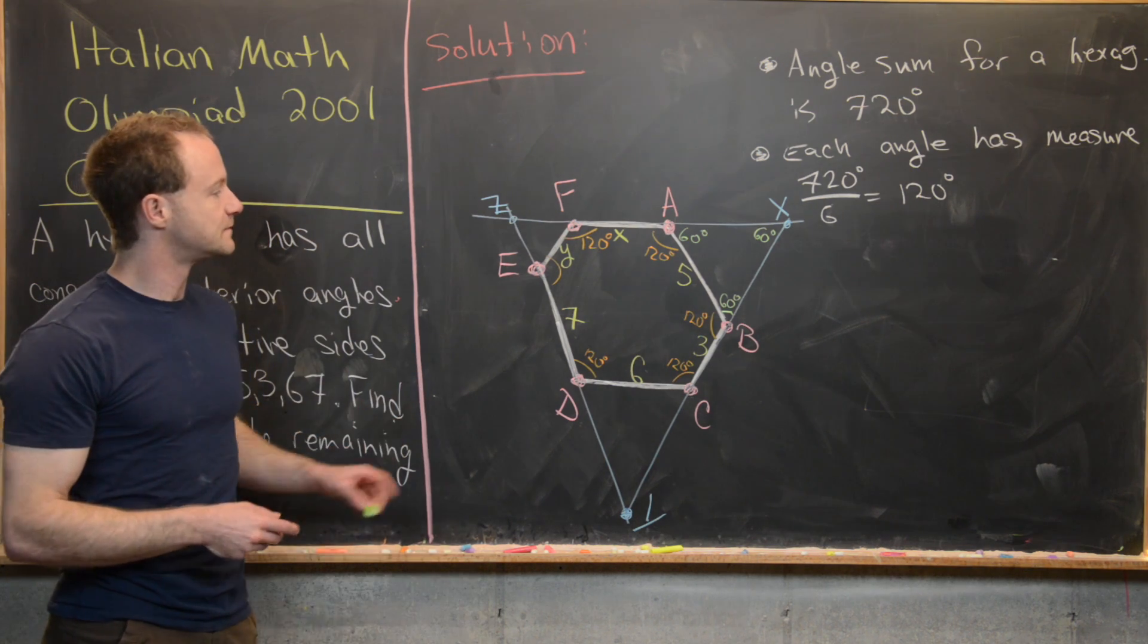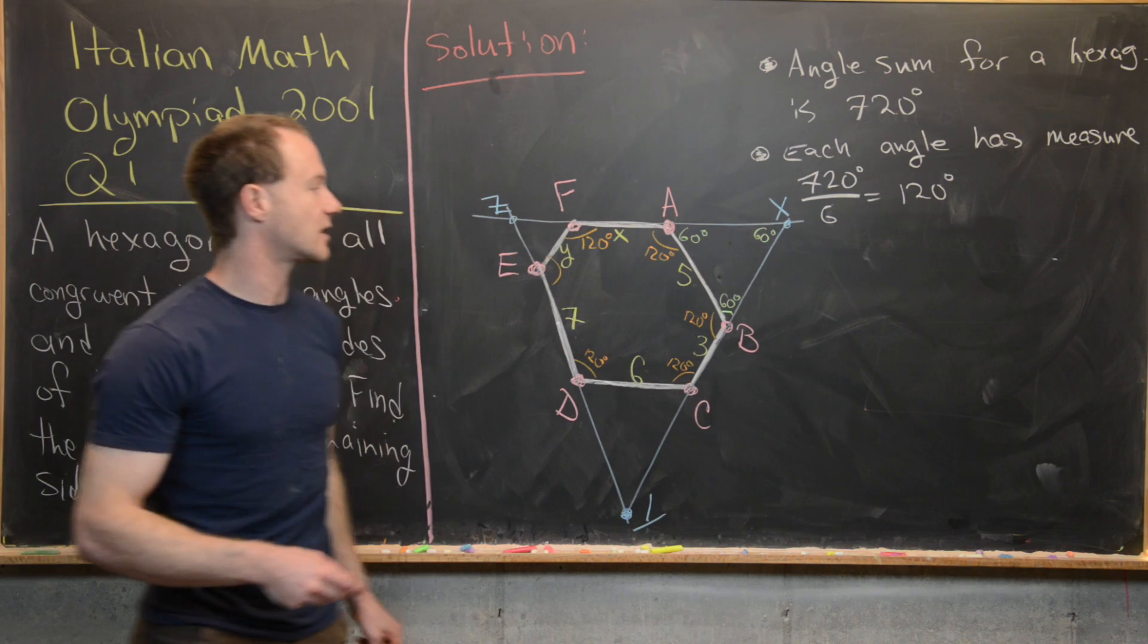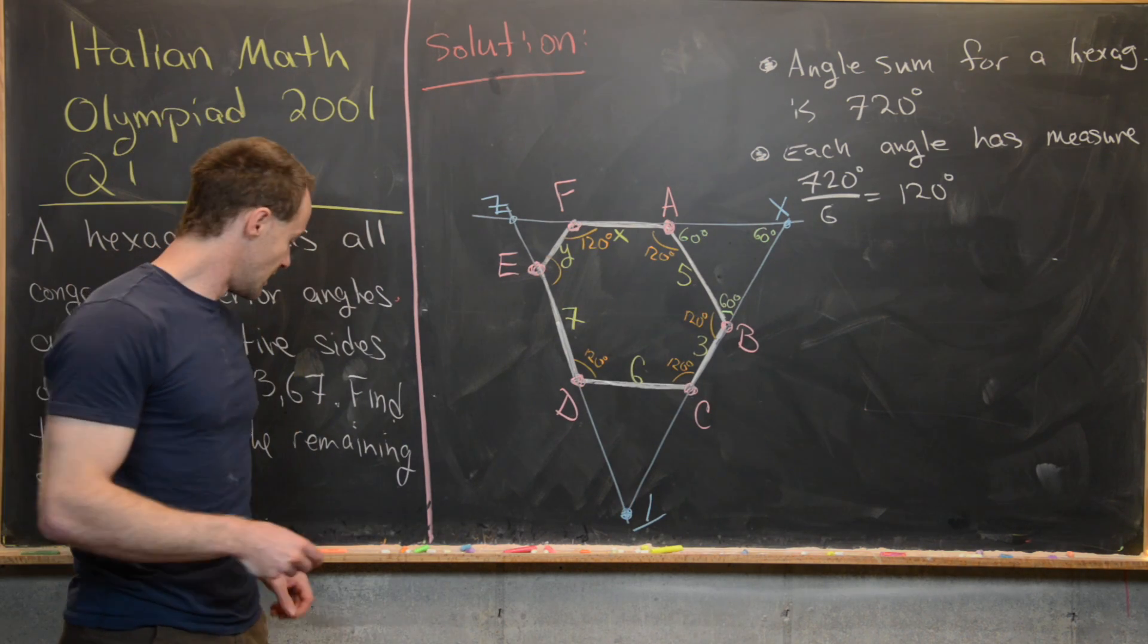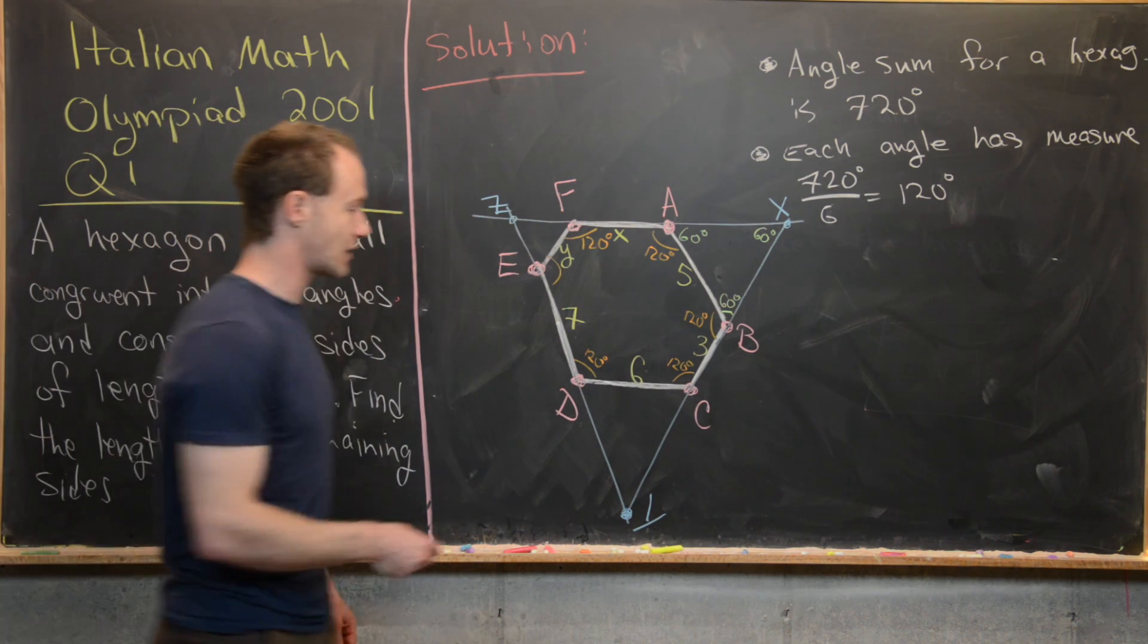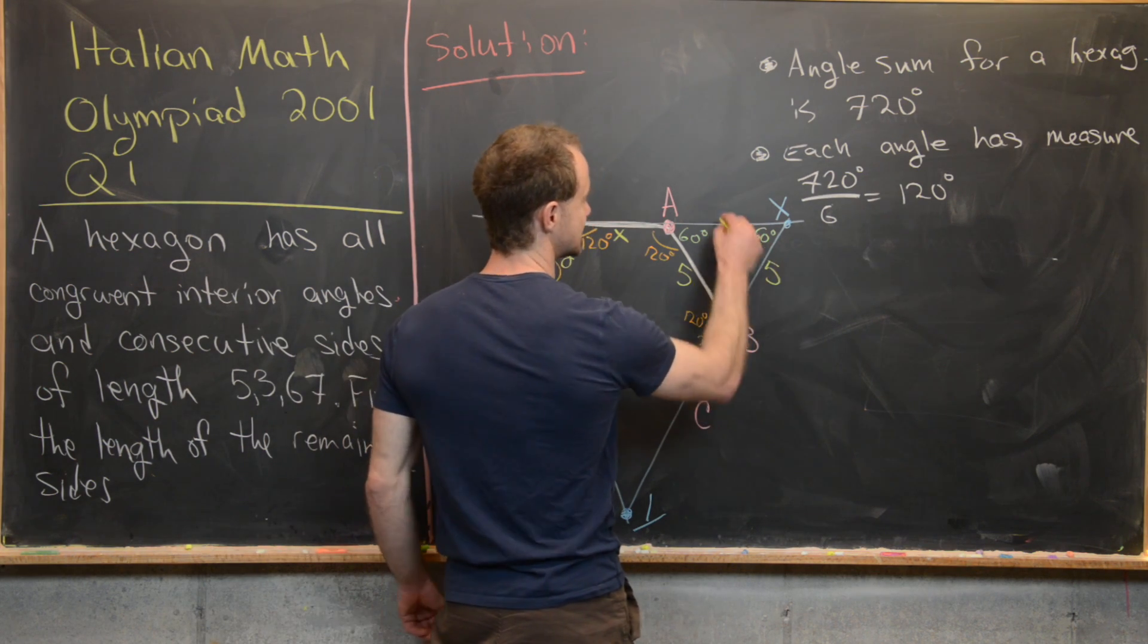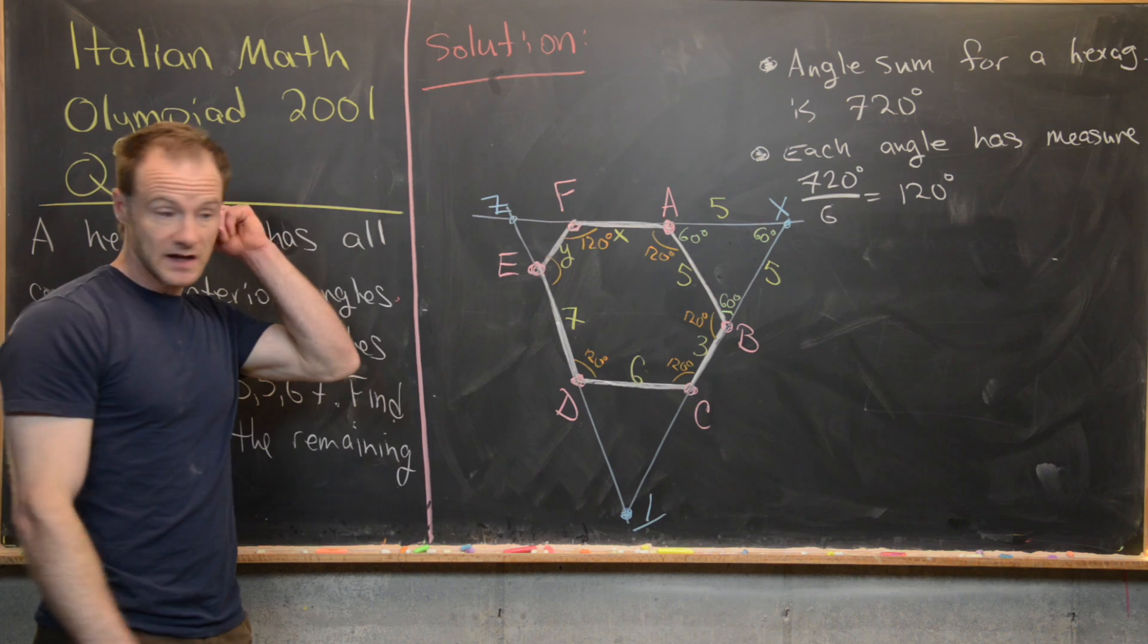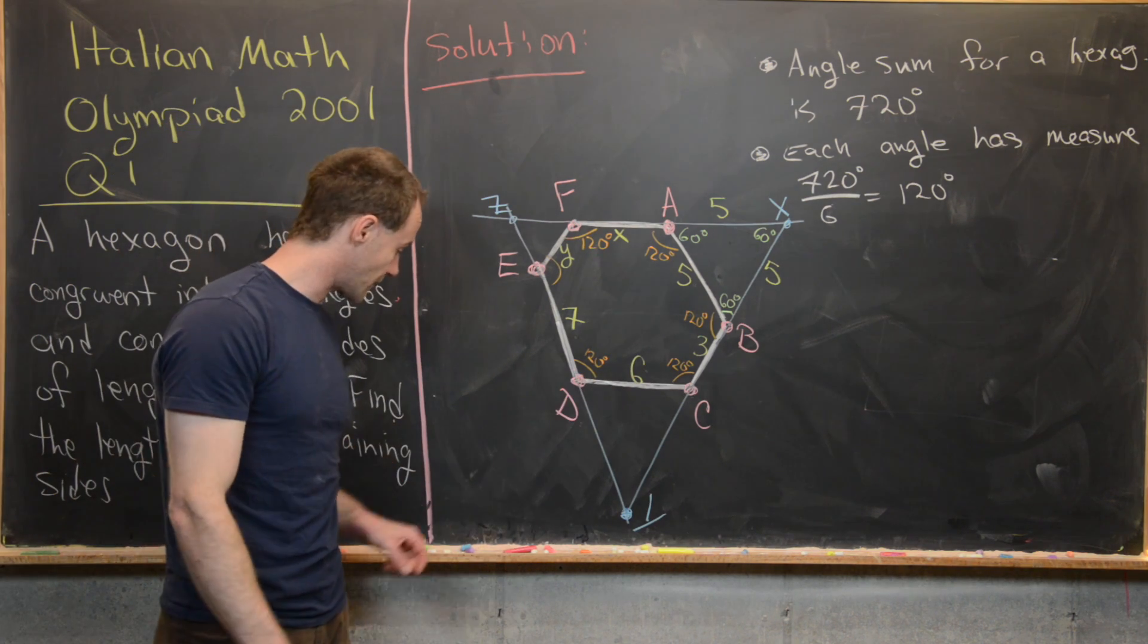So what that means is that this triangle right here is equilateral. But if that triangle right there is equilateral and it has this side length of 5, then it has this side length and this side length of 5. Now we can play the same game over here.